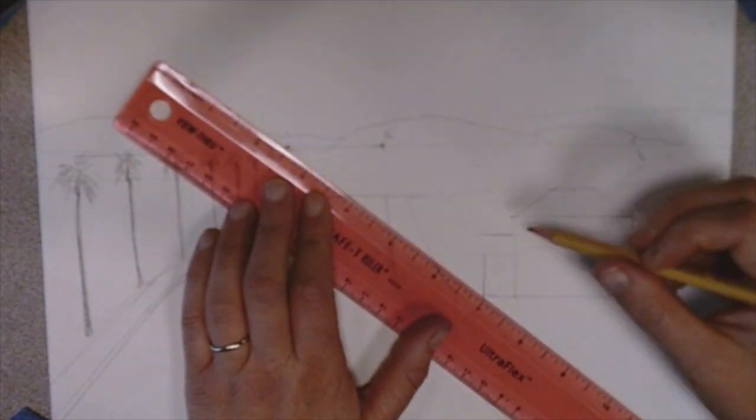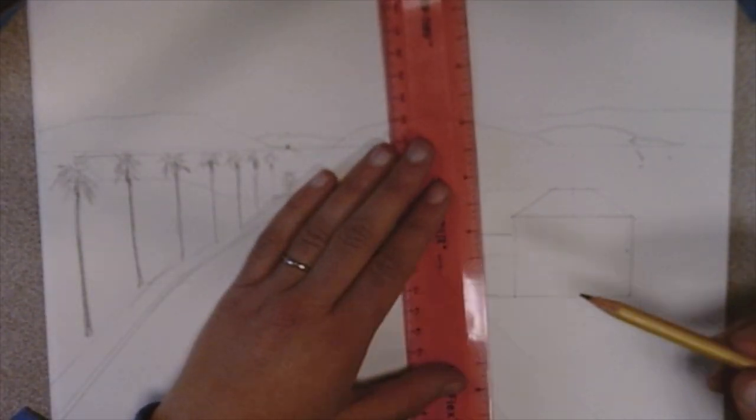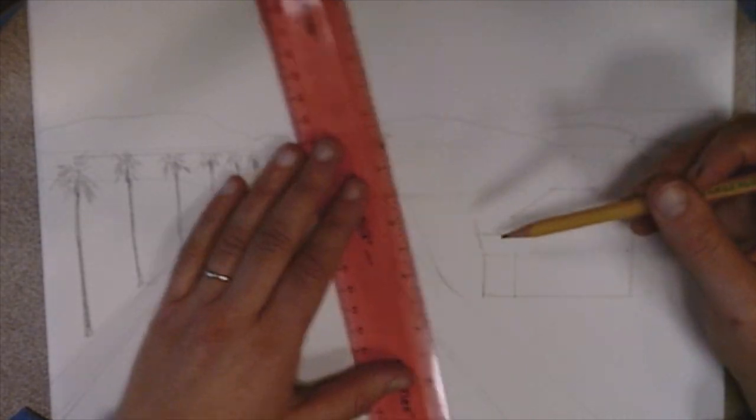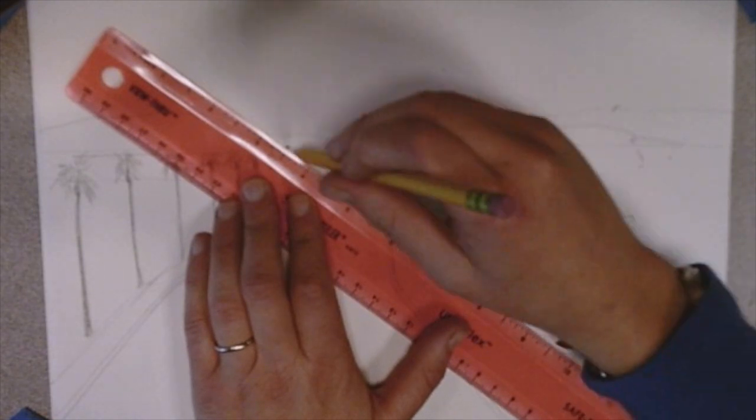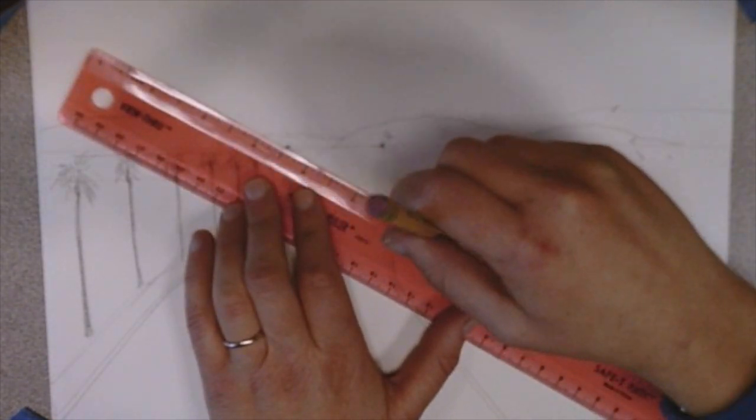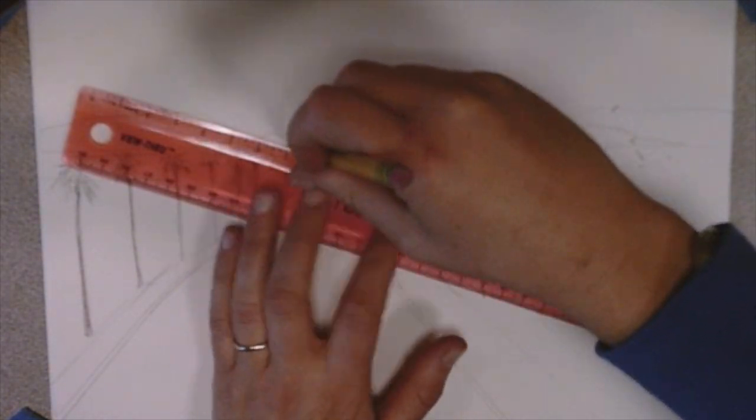So the house is flat right now. I'm going to use the vanishing point and line up the sides to the vanishing point itself. And remember, you're doing all of this super light. You're not pressing very hard.